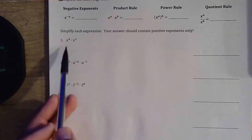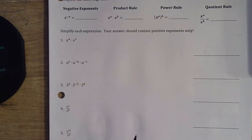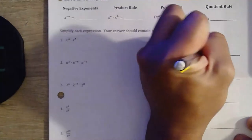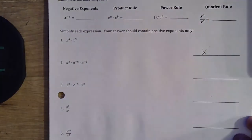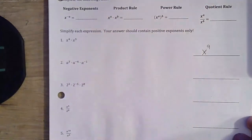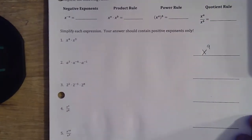Alright, so when multiplying exponents with the same base, we go ahead and add those exponents. So we keep that same base of x, and then 4 plus 5 gives us 9 — exponent of 9.